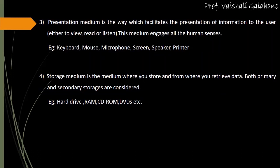The other type is presentation medium. Presentation medium is the way which facilitates the presentation of information to the user — either to view, read, or listen — and this medium engages all the human senses. For example, to write something using a computer, you need a keyboard and mouse. To record audio, you use a microphone. Devices like screen, speaker, and printer are all presentation medium, as they are needed to represent and interact with information.